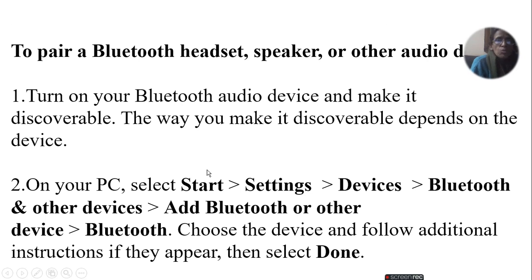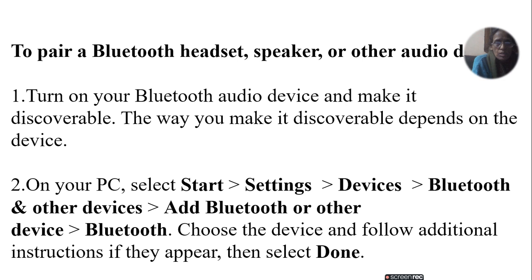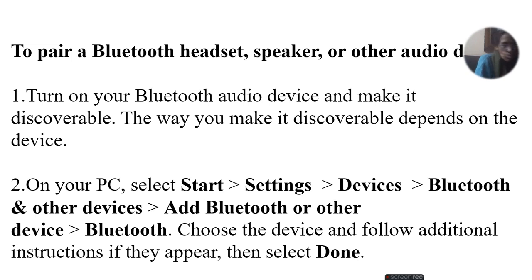To pair a Bluetooth headset, speaker, or other audio device, turn on your Bluetooth audio device and make it discoverable. The way you make it discoverable depends on the device. On your PC, select Start > Settings > Bluetooth and other devices > Add Bluetooth or other device, then choose Bluetooth. Choose the device, follow any additional instructions, and select Done.